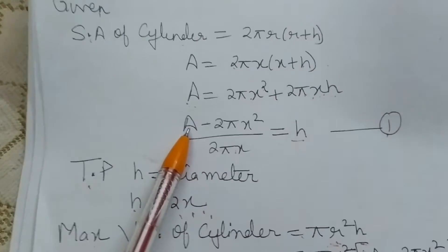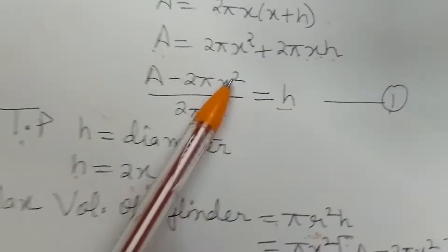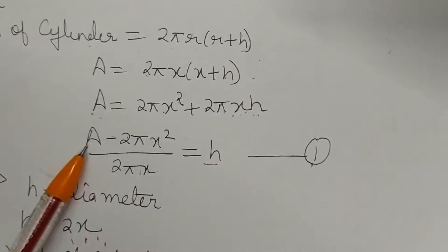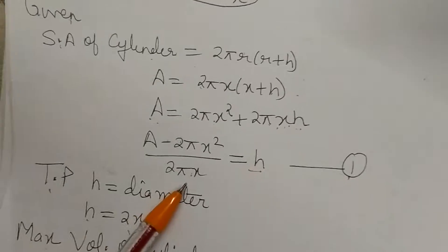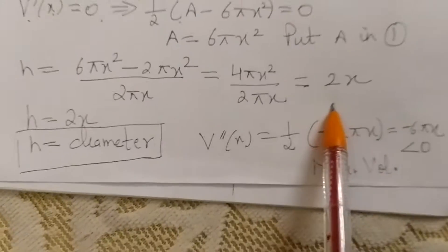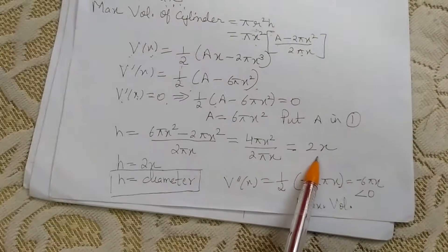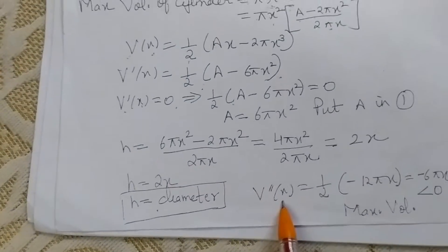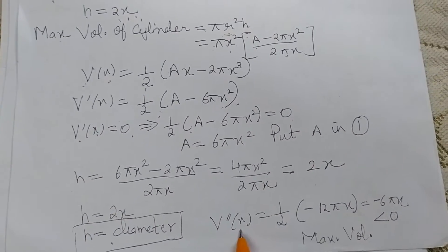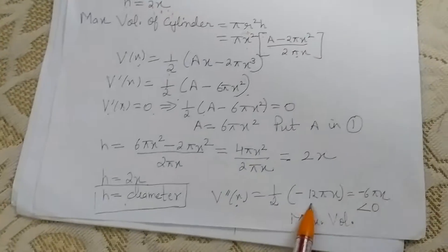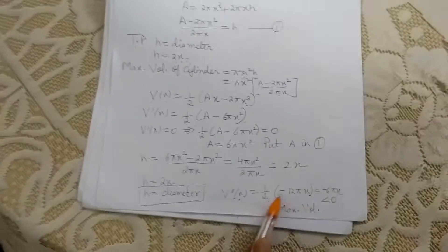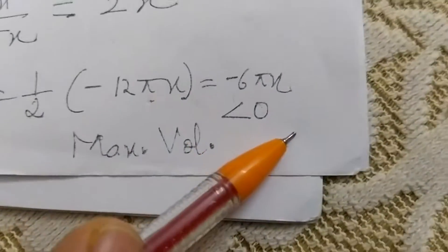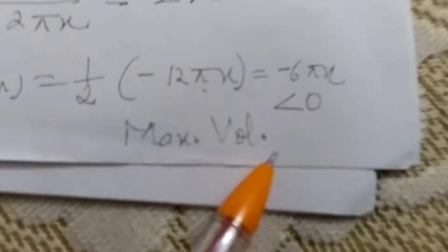Now put the value of area A = 6πx² back into equation 1: h = (6πx² − 2πx²) / (2πx) = 4πx² / 2πx = 2x. So height equals 2x, which is the diameter — this is proved. For the double derivative: it equals (1/2)(−12πx) = −6πx, which is less than 0, confirming volume is maximum.